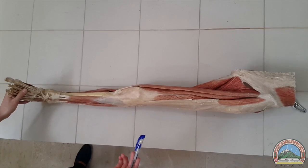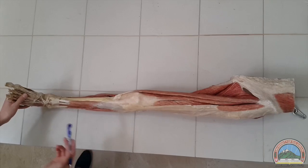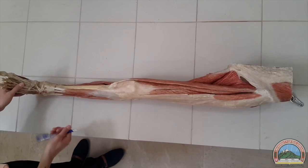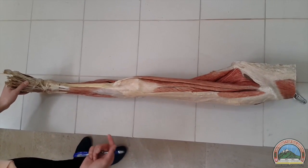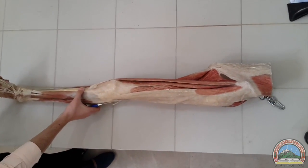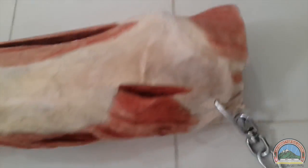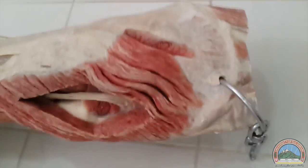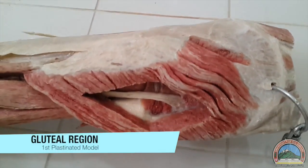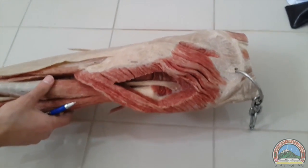Today we are going to talk about the lower limb on the first plastinated model. This is the anterior view of the left side, just to set the orientation. Now we are actually going to begin talking about the gluteal region. This is the posterior view of the gluteal region.